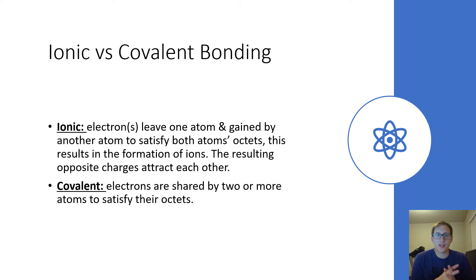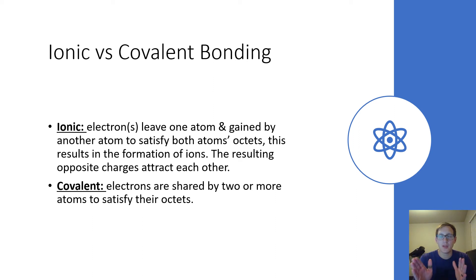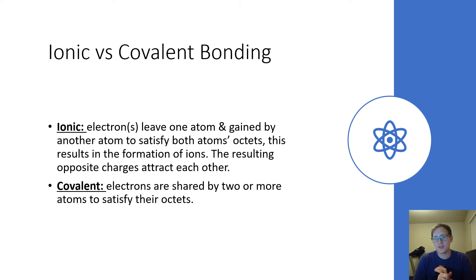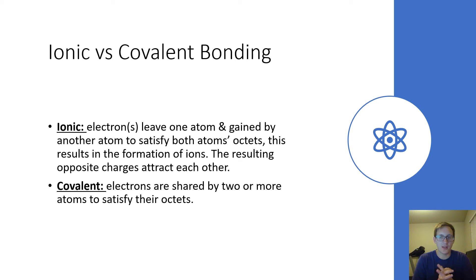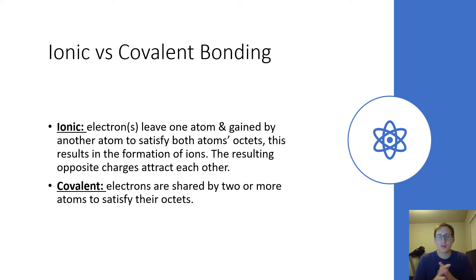So just a reminder on ionic and covalent bonding: ionic bonding is when one atom is giving away electrons to another atom in order for both atoms to have stable outer shells, meaning that they have full octets. So if an atom has one valence electron that it's trying to get rid of, and then there's another atom that has seven valence electrons and wants to gain one to fill its octet, those two things will bond. Covalent bonds are when electrons are shared by two or more atoms. By sharing, they are mutually using those electrons to fill their outer shells and satisfy the octet rule.